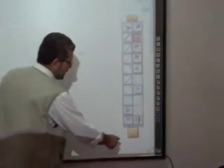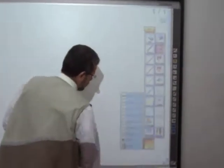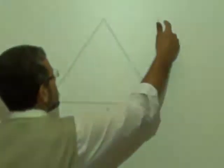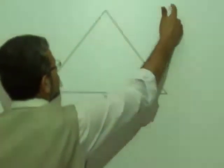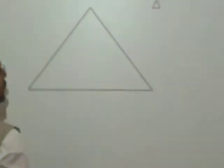We can click on Starboard in the tools and take the objects. Here we have a lot of options. We can take the triangle and draw it.